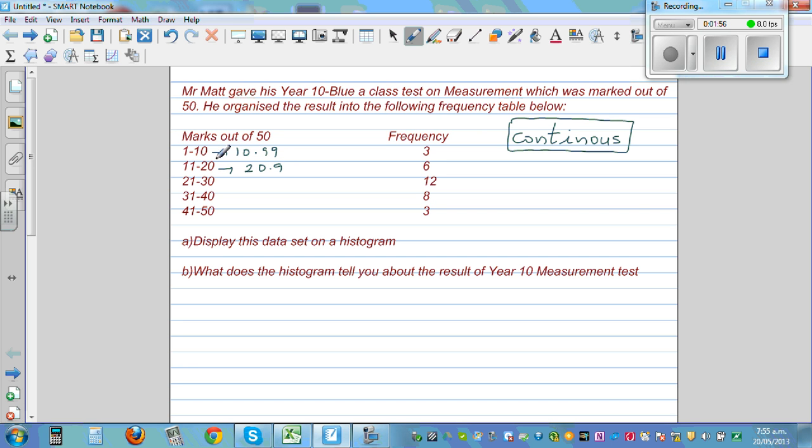And so on. So this 20 means this is up to 20.999. And this class starts from 21, so this is where it starts, and it ends at 30.999, and so on.